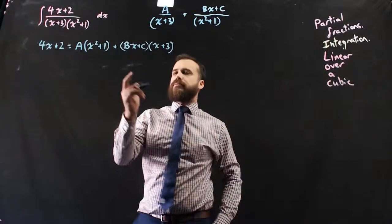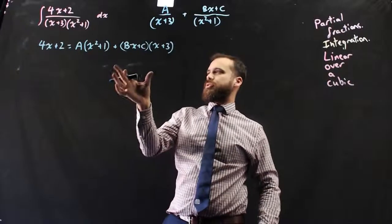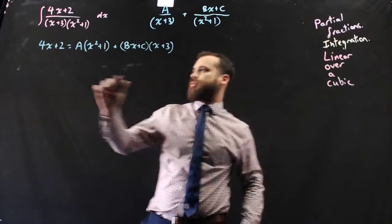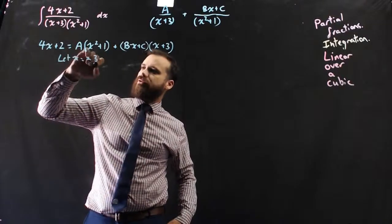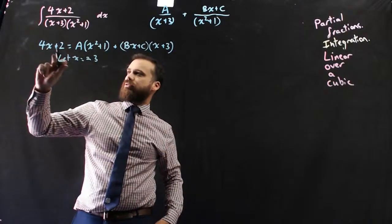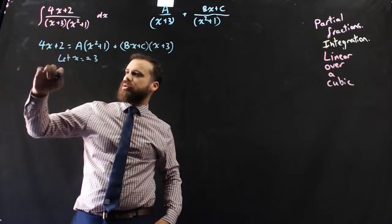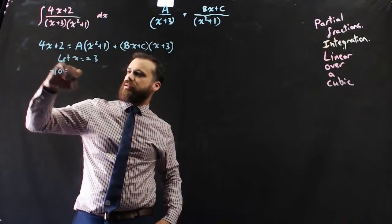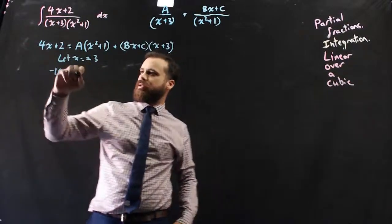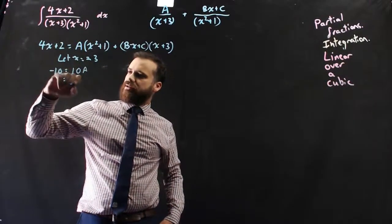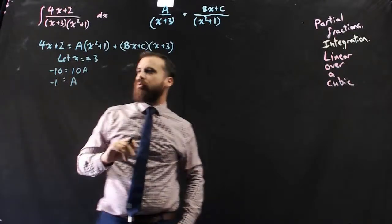Everything proceeds pretty normally from here. We need to get rid of one of the terms. So if I let x equal negative 3, then 4 times negative 3 is negative 12 plus 2 is negative 10. And then negative 3 squared is 9 plus 1 is 10. So we're going to have 10a. So a is equal to negative 1.